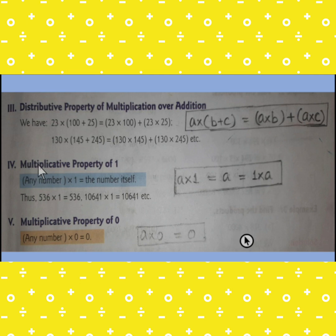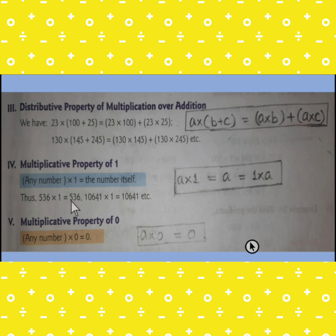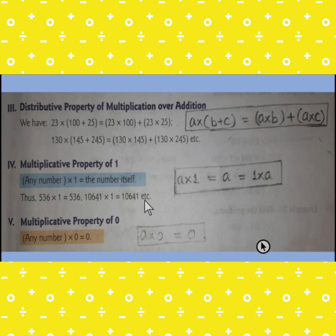The fourth property is the multiplicative property of 1. When we multiply any number by 1, we get the number itself. It is A into 1 equals A. For example, 536 into 1 is 536, and 10641 multiplied by 1 gives the same number 10641.